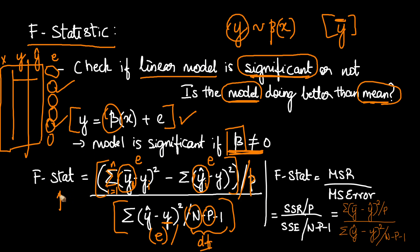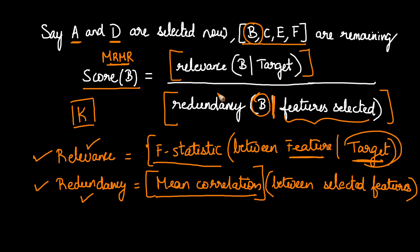Net net, higher the F statistic, better is your model, or better is your particular variable that we are dealing with. Higher the F, better is your X. Higher the F, the higher will be the relevance score. The F statistic higher, relevance score will be higher, which means this score will also be higher, which means there's a higher chance that this particular variable B will get selected for the current iteration.